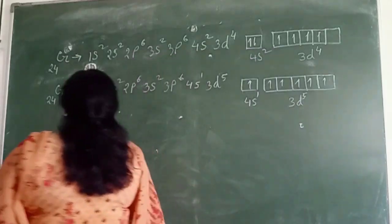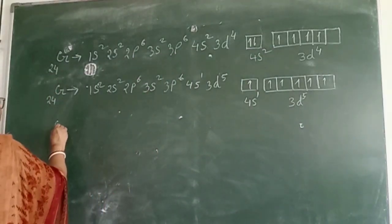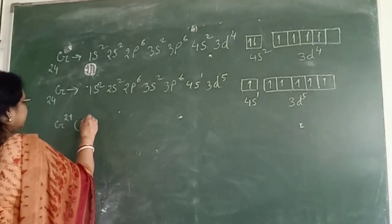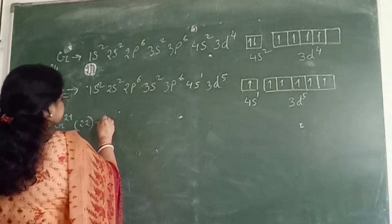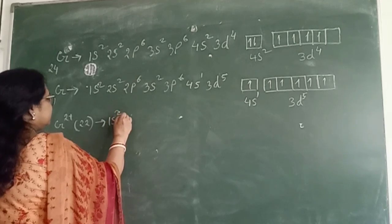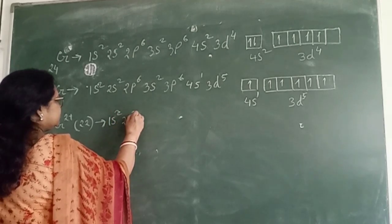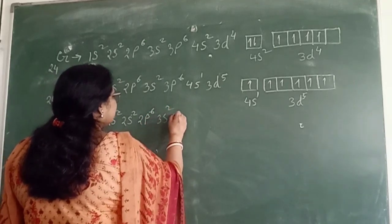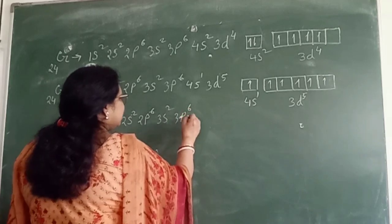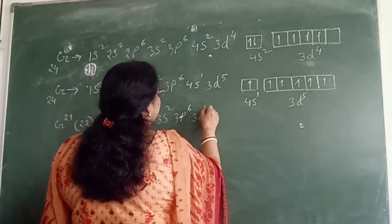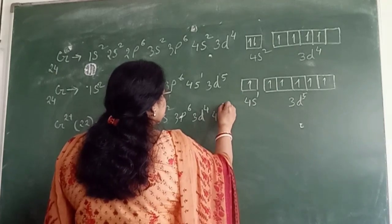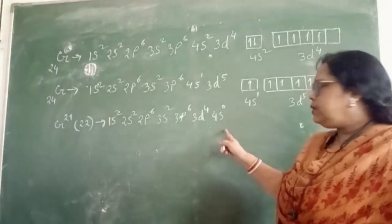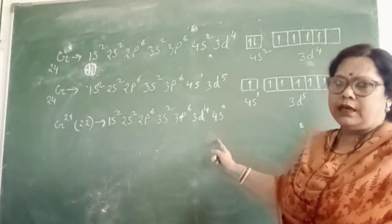In case of CR2 plus ions, there are 22 electrons. The configuration is: 1s2, 2s2, 2p6, 3s2, 3p6, 3d4, 4s0. Two electrons are removed from the valence shell.